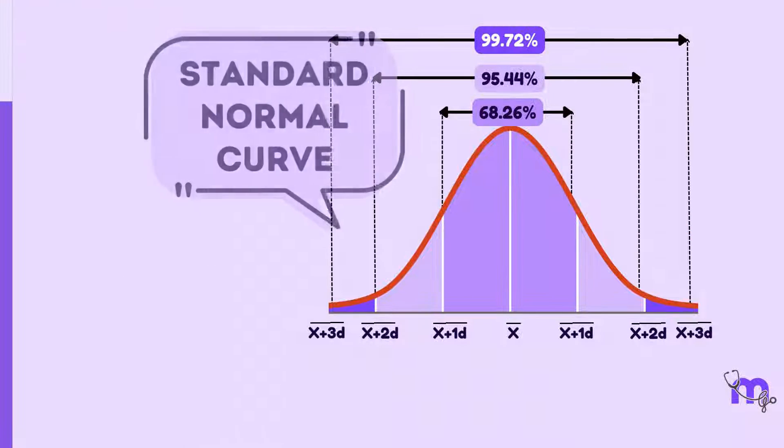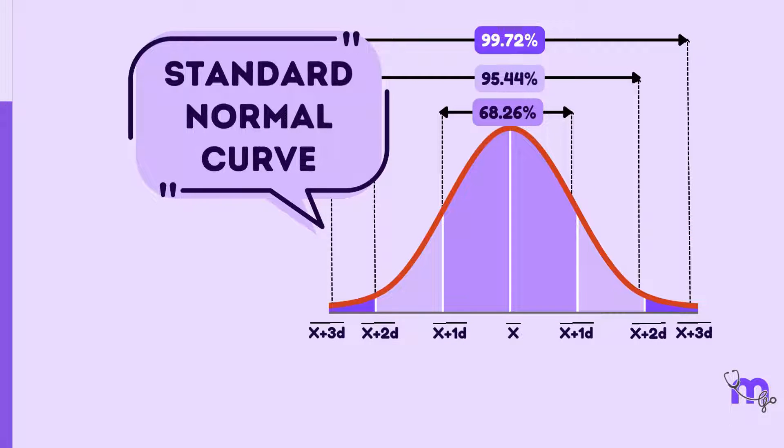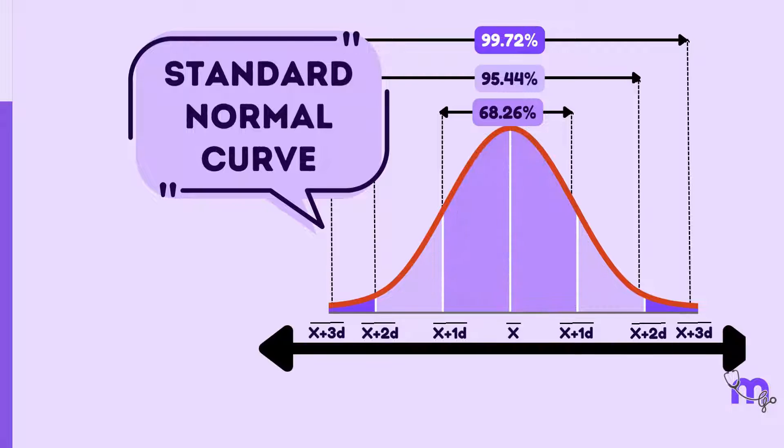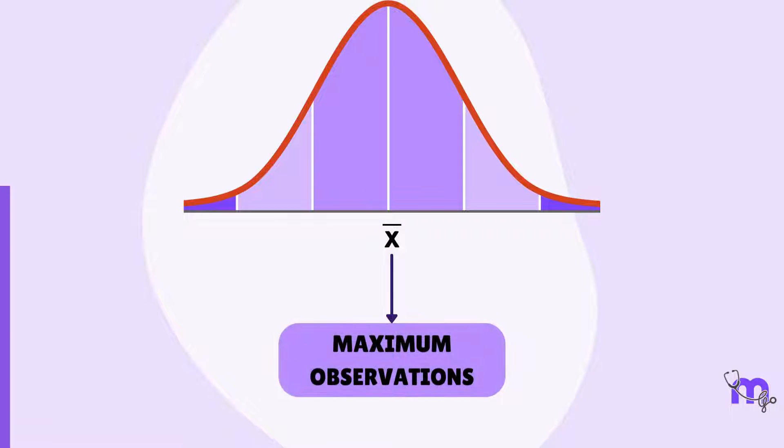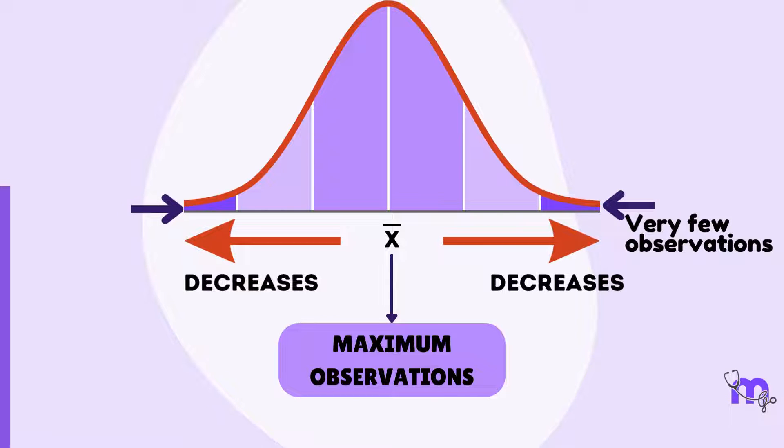However, there is only one standard normal curve. It is a bell-shaped curve which is perfectly symmetrical, based on an infinitely large number of observations. The maximum number of observations is at the mean, and the number of observations gradually decreases on either side with very few observations at the extreme points.